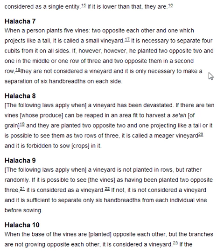The following laws apply when a vineyard has been devastated. Halakha 8. If there are ten vines whose produce can be reaped in an area fit to harvest a sa'ah of grain, and they are planted two opposite two and one projecting like a tail, or it is possible to see them as two rows of three, it is called a meagre vineyard, and it is forbidden to sow crops in it.